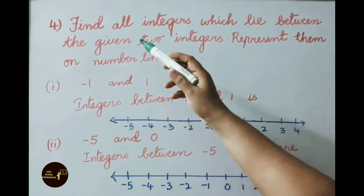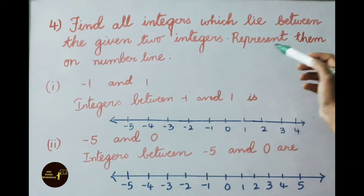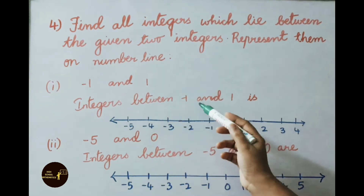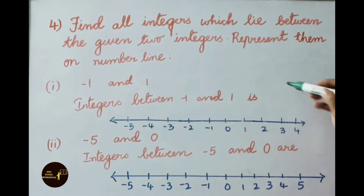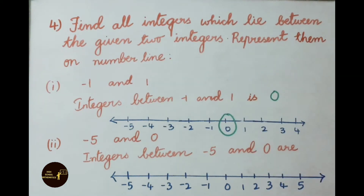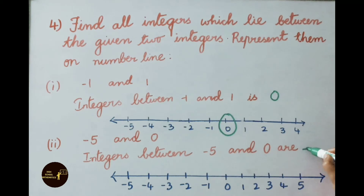Question 4: Find all integers which lie between the given two integers and represent them on the number line. First: between minus 1 and plus 1, the only integer is 0 — mark it on the number line. Second: between minus 5 and 0, the integers are minus 4, minus 3, minus 2, and minus 1.